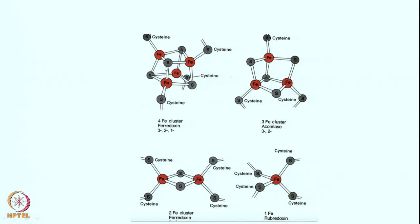Let us look at different electron transfer proteins. The major metal units in electron transfer proteins are known as iron-sulfur clusters, involved in electron transfer or electron relay processes — they act as relay stations. Many different such relay stations exist: a four-iron cluster ferredoxin with iron in different oxidation states, a three-iron cluster aconitase, a two-iron cluster ferredoxin, and one-iron rubridoxin, all playing key roles in electron transfer processes.